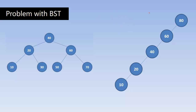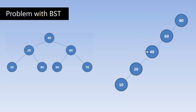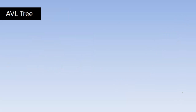That means the total number of comparisons equals the total number of elements. For example, to search for 10, I compare with 80, then 60, then 40, then 20, then 10 — the total comparisons equal the total number of elements. This takes too much time when the tree is not balanced. To avoid this problem, we introduced the AVL tree.